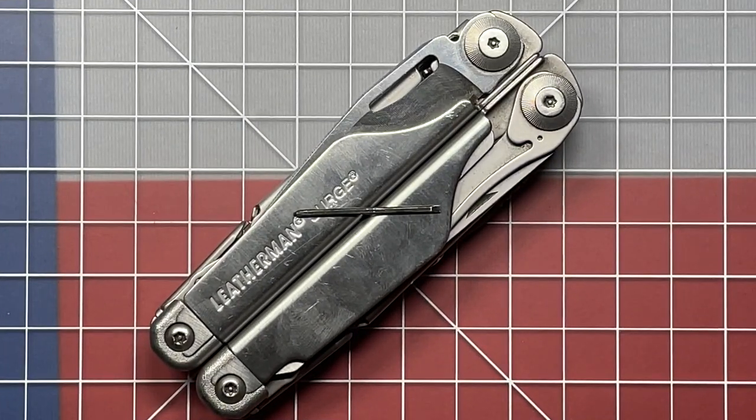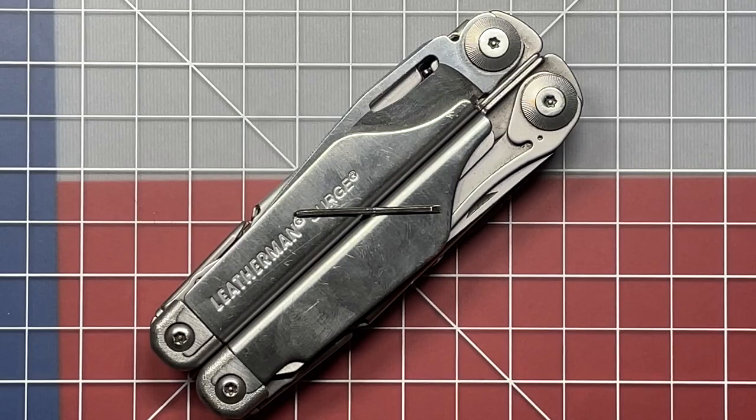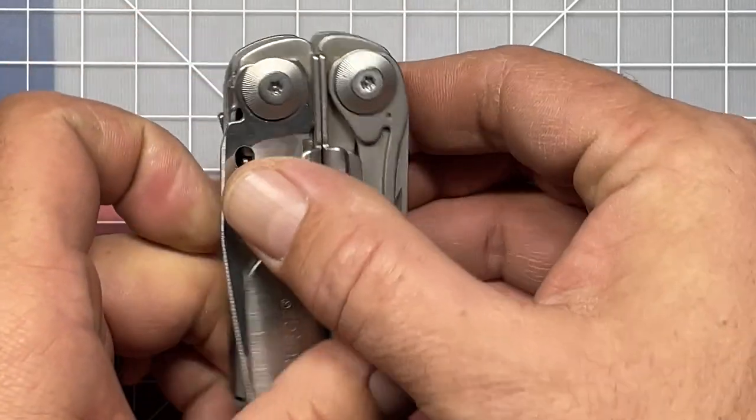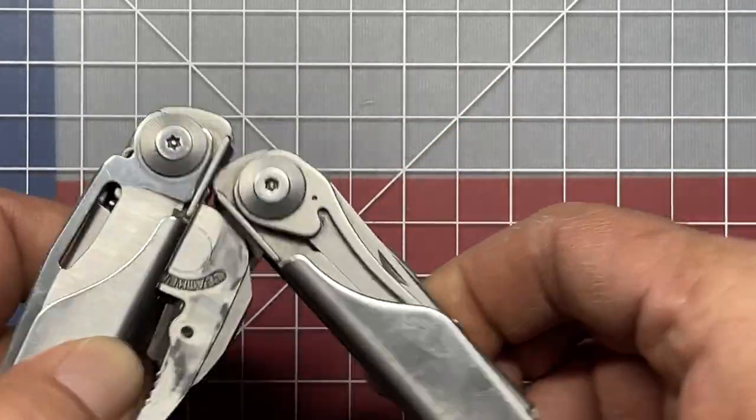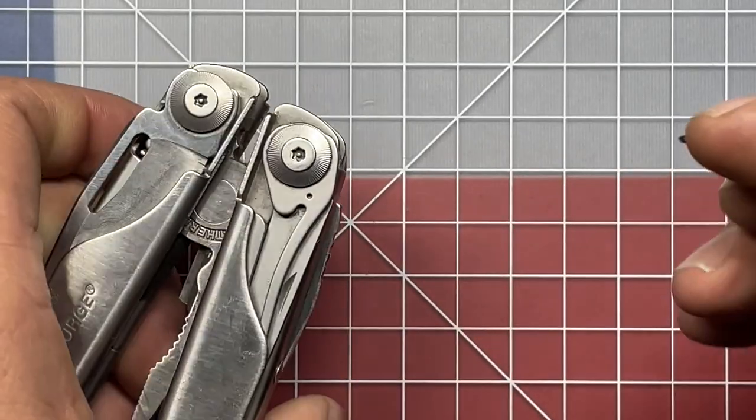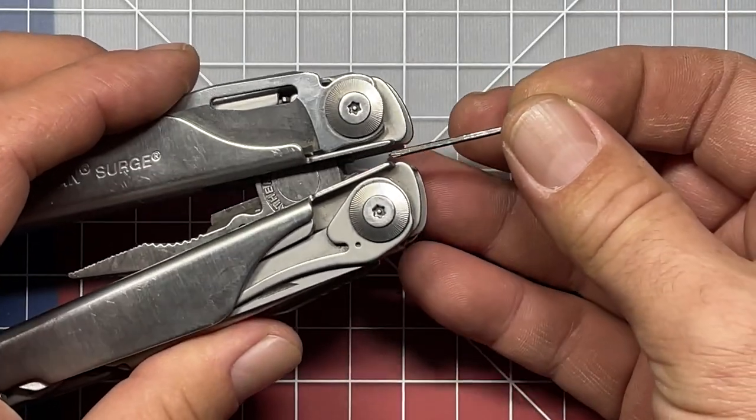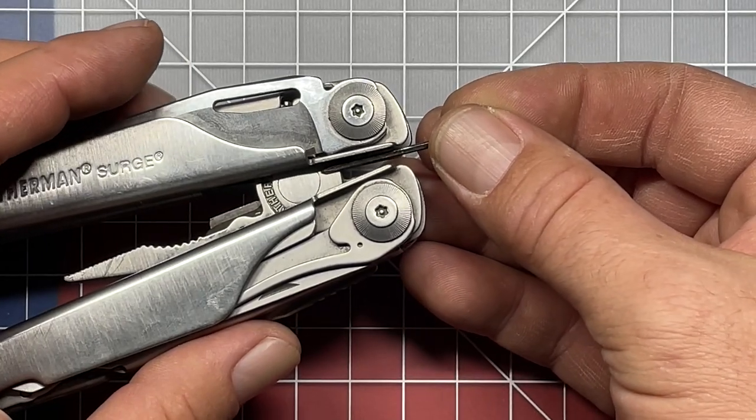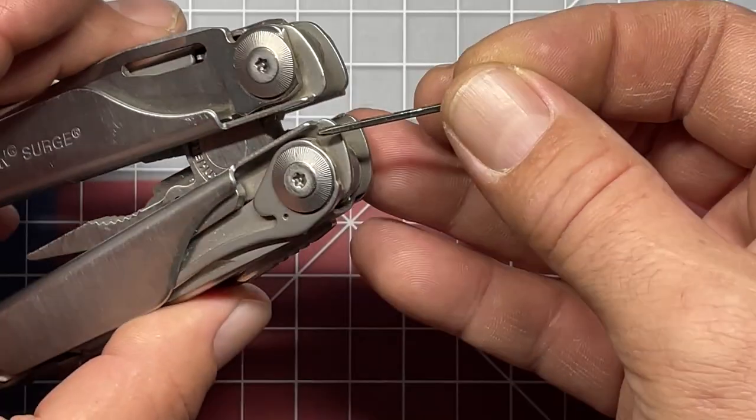So the first way that I figured out that you could kind of use the micro driver is kind of in the old way that they used to do the bit adapter kit that they used to put on multi-tools. So the first solution is to set it in between, you're going to basically collapse it in between the frame here.